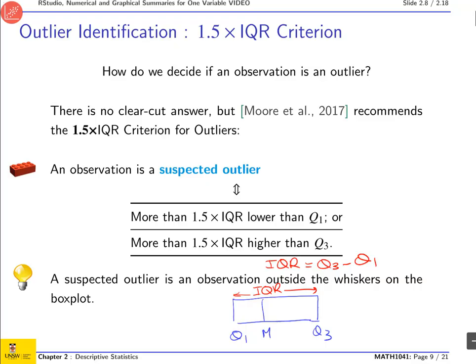So you then multiply this quantity by 1.5 and you add that to the third quartile and you get some value. Let's say it's here. Anything which is beyond that value, so anything here, would be considered a suspected outlier. Then you take the exact same thing. So that's going to be Q3 plus 1.5 times the interquartile range.